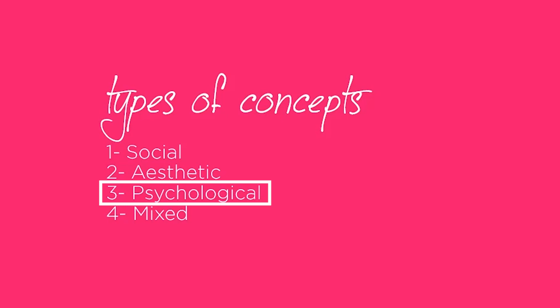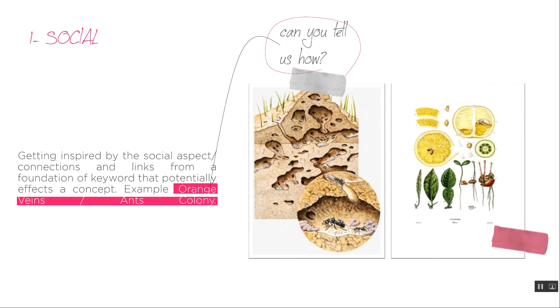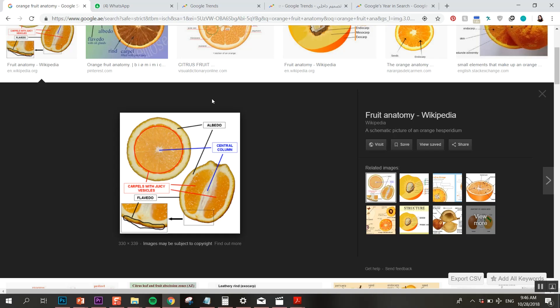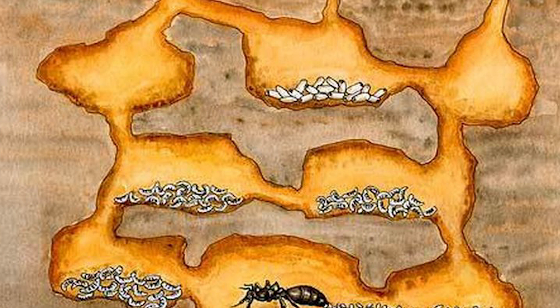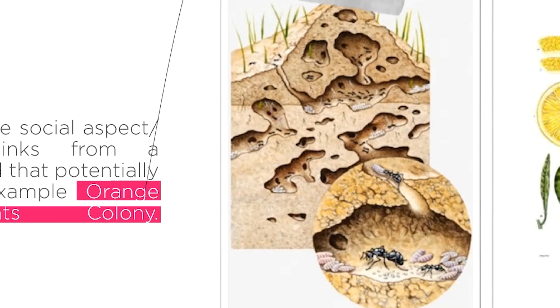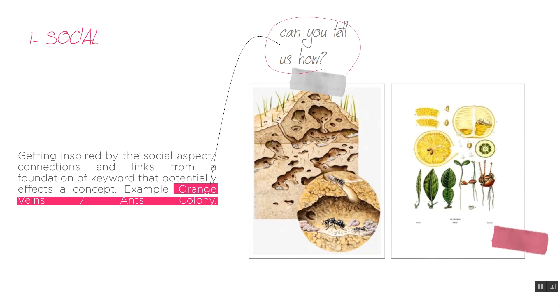The fourth type is a mix of all three or two of them. A social concept is when you get inspired by social connections and link an idea to a foundation of a keyword. For example, if we look at an orange, the central column is the main connection that distributes nutrients to all the different parts. Also, if we look at an ant colony, we'll see very interesting shapes and forms — it's all built around functionality and circulation and how the ants function together to reach the goal. The way you can apply such a concept is by creating circulation that mimics that same inspiration, the ant colony. It's such an organic shape, and the little nooks where they store things are very interesting.